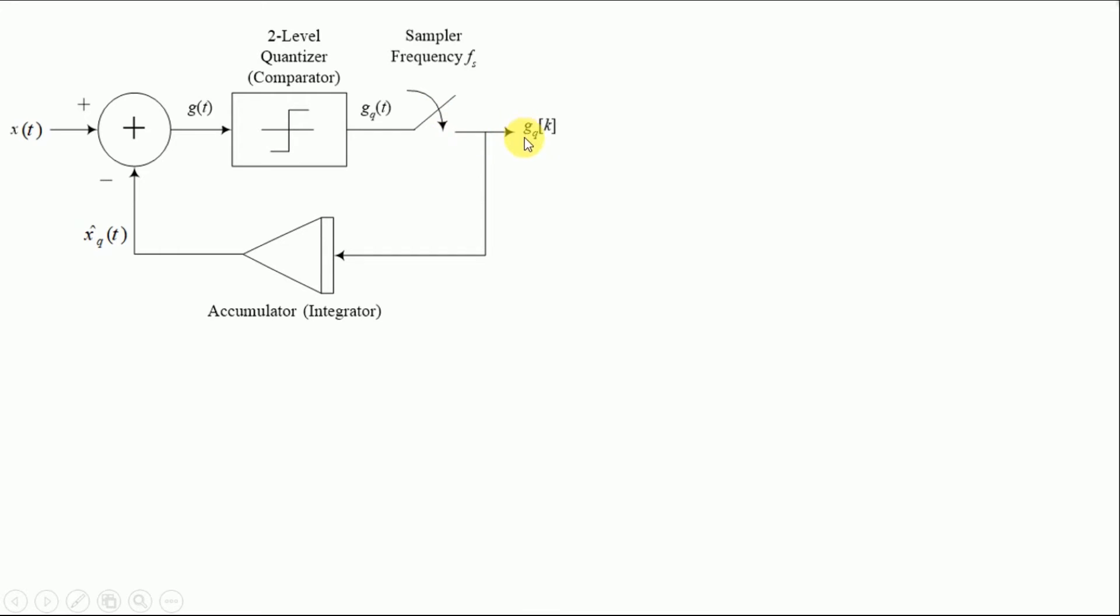And the output of sampler is simply gq of k. Now this is a discrete time signal. This signal is fed back to an accumulator which is simply an integrator. So it is going to sum or integrate all of these values over here.